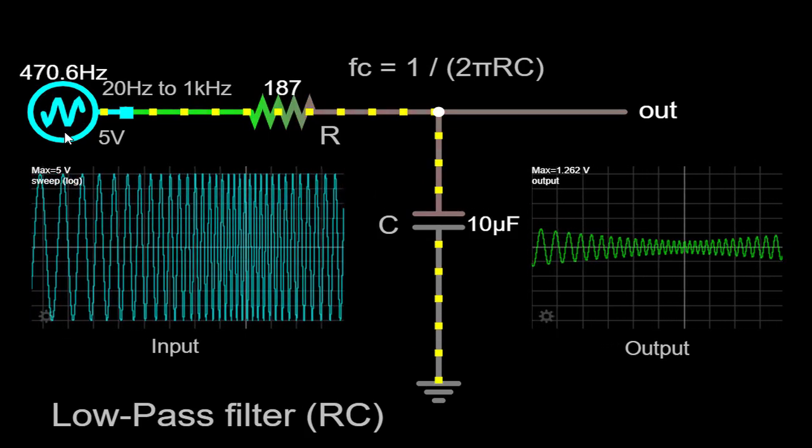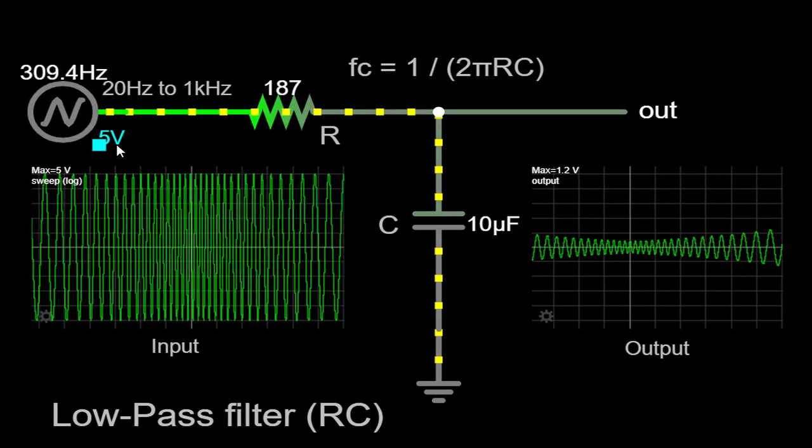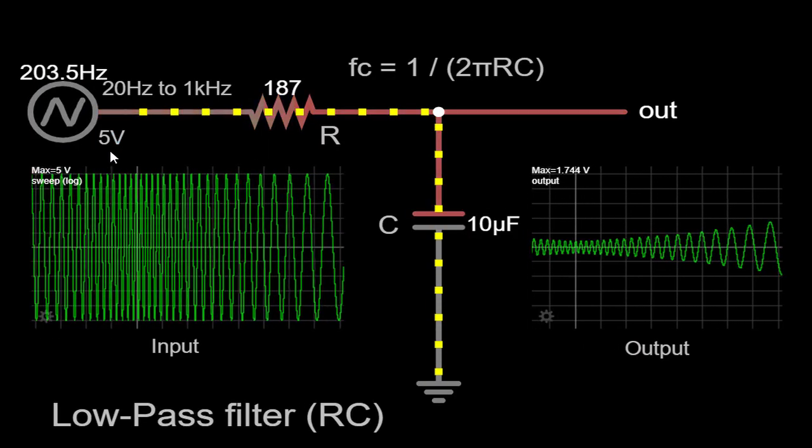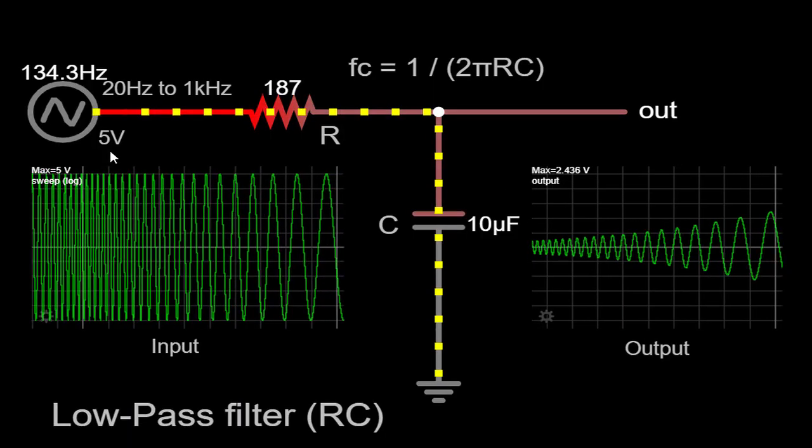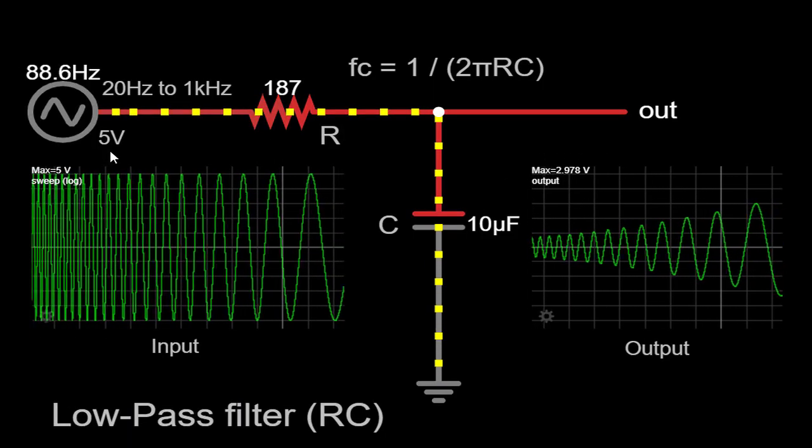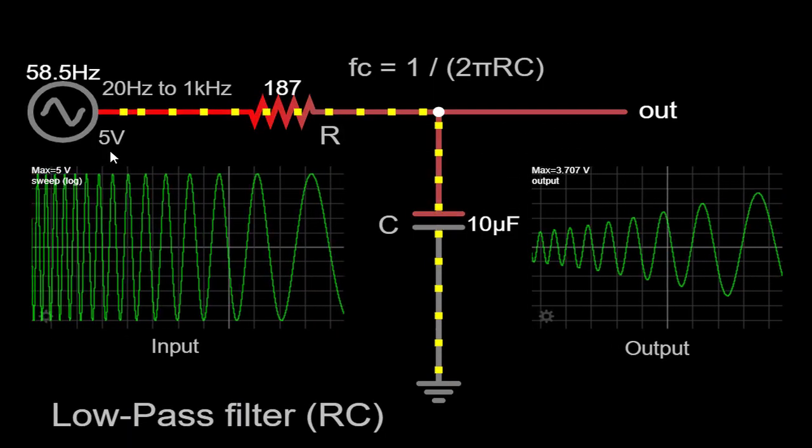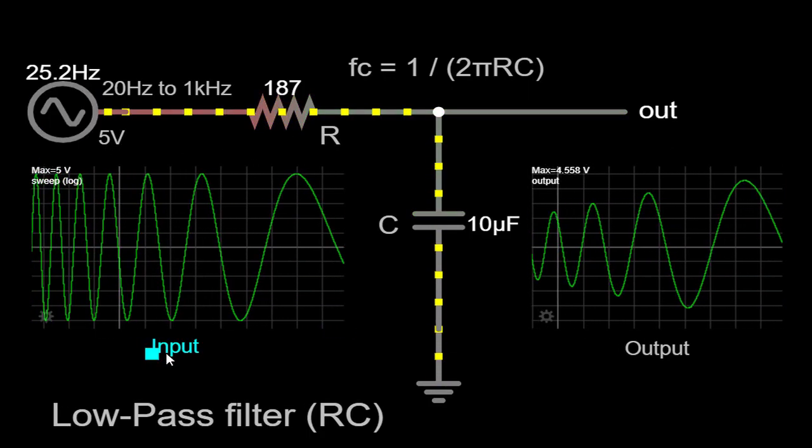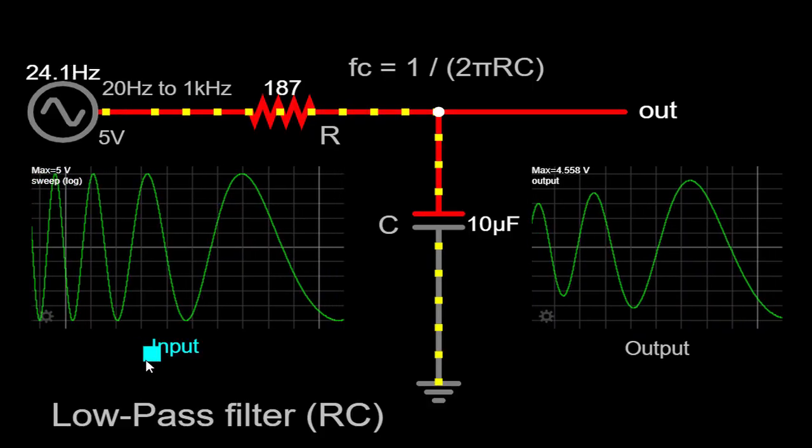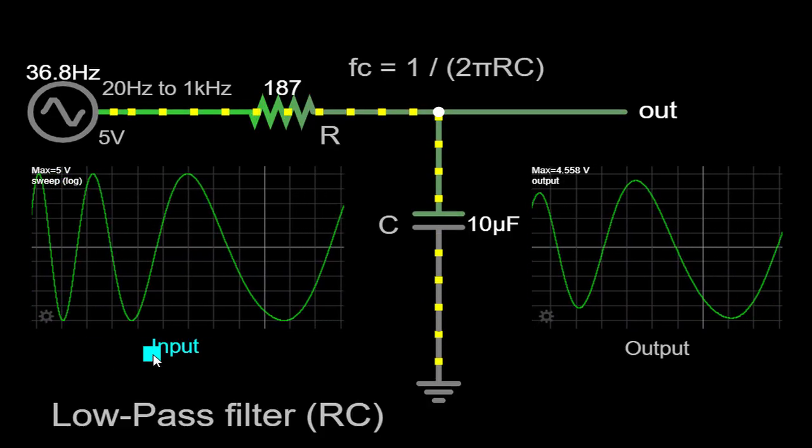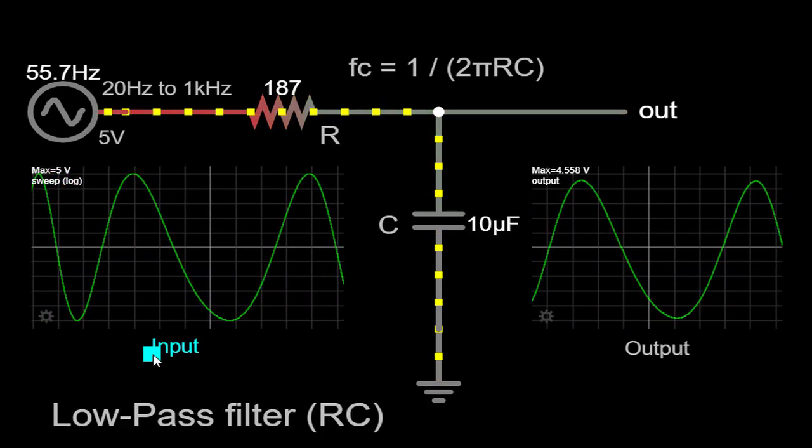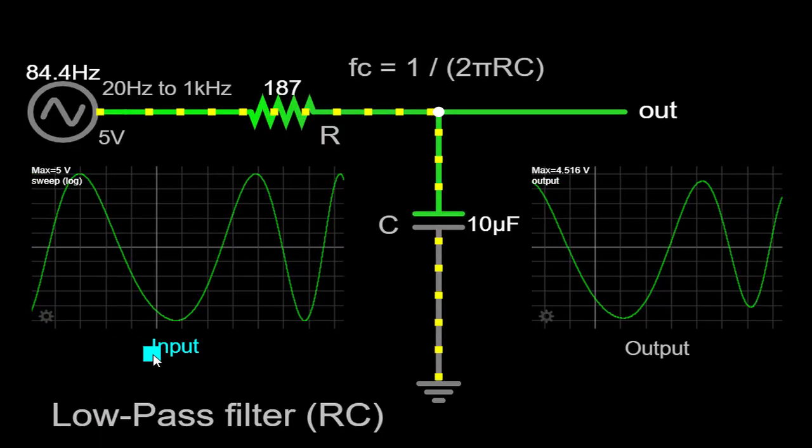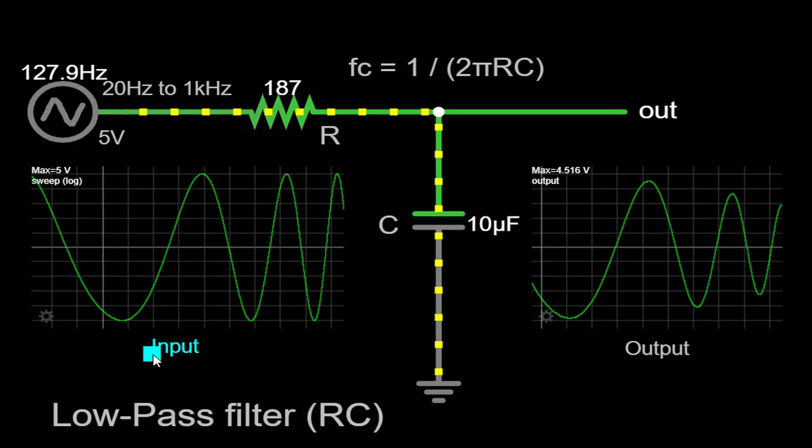Finally, the maximum voltage has been set to 5 volts, which will assist us in evaluating the amplitude of the input and output signals. As we progress, you will notice two distinct signals displayed on the scope. The first signal represents the input waveform, which is the original signal being fed into our RC low-pass filter. This waveform showcases the various frequency components present in the input signal.